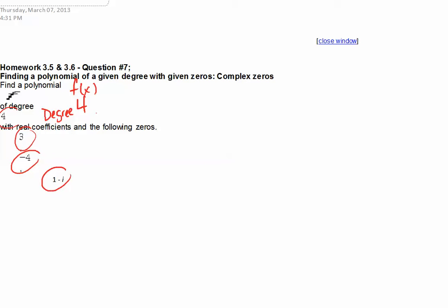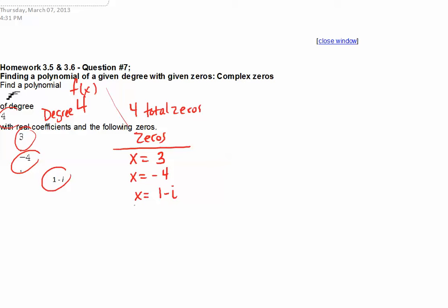The degree of 4 tells me that I'm searching for 4 total zeros. So my list of zeros has x equals 3, x equals negative 4, and x equals 1 minus i. I'm missing the fourth zero, and it comes from the pair that goes with the imaginary or complex zero — the conjugate of 1 minus i, which is 1 plus i. So there's my list of four zeros.